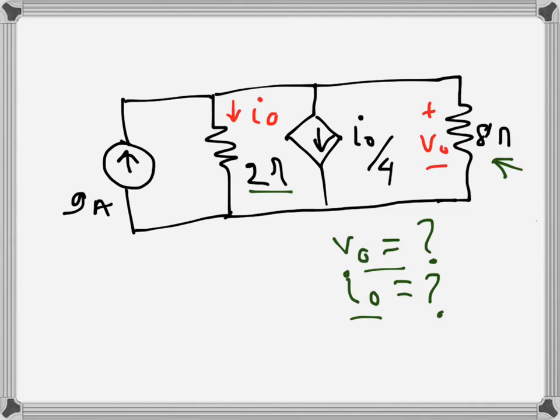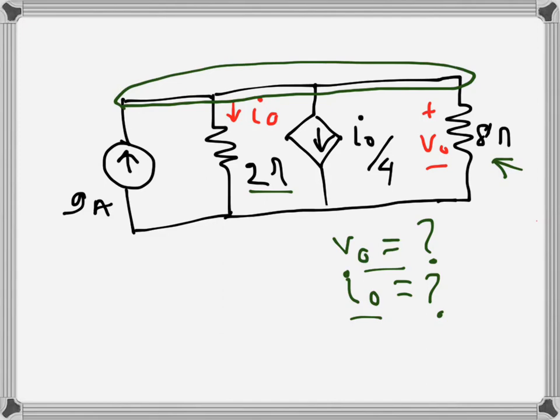This is a node here and this one is the ground. If we apply KCL at this node, we can write Kirchhoff's current equations. We can see that 9 amps is an entering current, so I will write the entering currents on one side and the leaving currents on the other side.